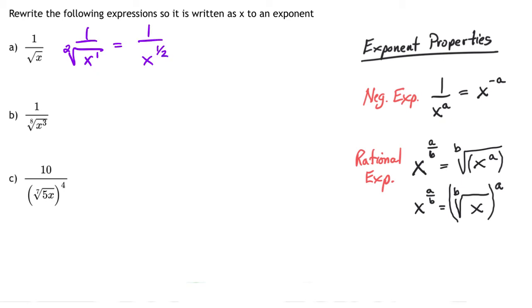Now if I use the negative exponent property, now that I have this in the denominator written the way it is, if I bring it to the numerator, it becomes negative. So if I take this and move it up to the numerator, it becomes x to the negative 1/2 power. That's what they want you to do in the directions. This is our first answer.